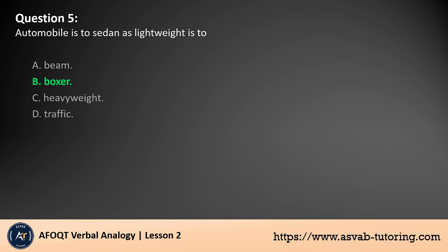Automobile is to sedan as lightweight as to boxer because a sedan is a type of automobile and a boxer is a type of lightweight class in boxing. Both pairs represent specific categories or types within a broader category, sedan within automobiles and boxer within lightweight boxing.